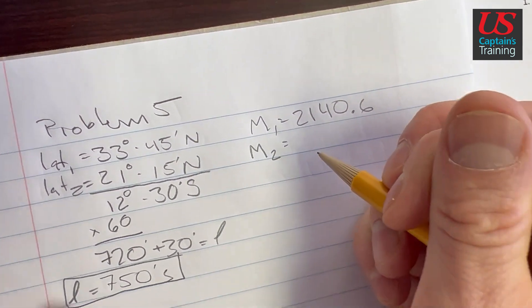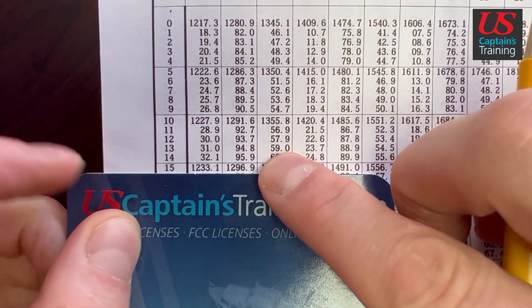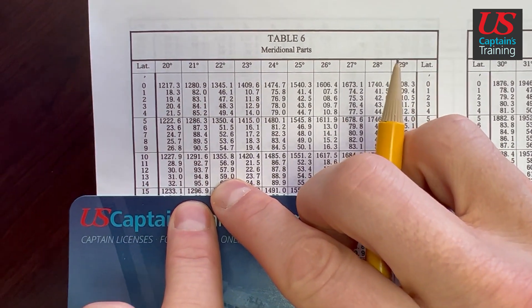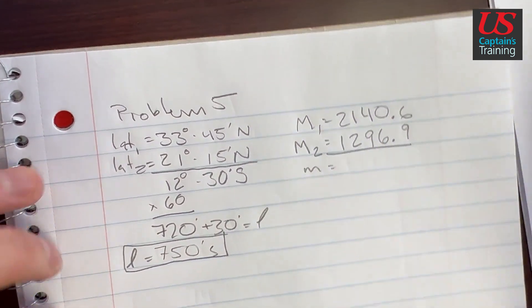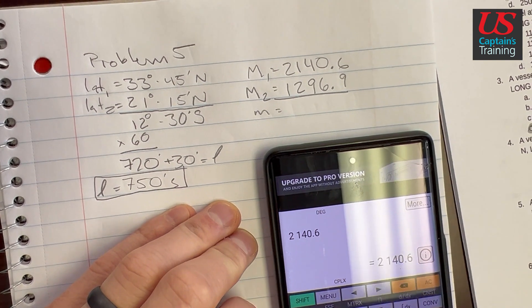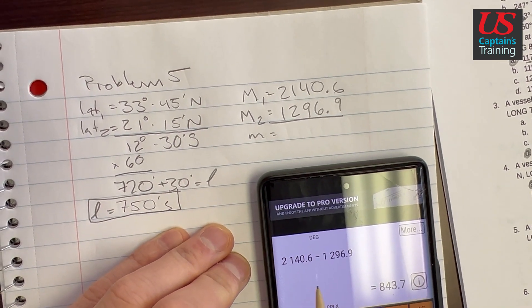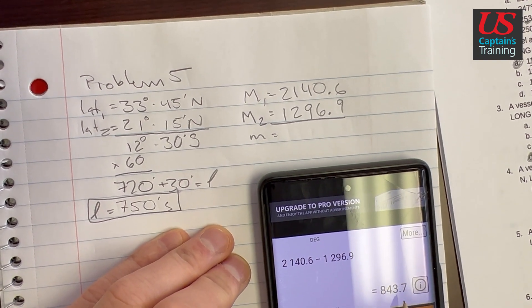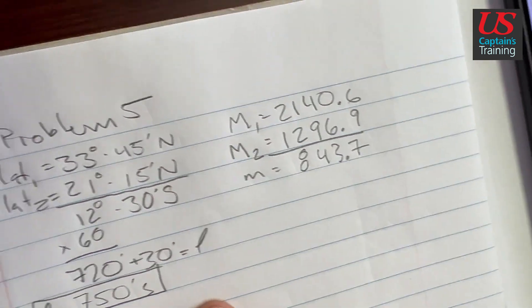M2 is the meridional parts of lat 2, which is 21 degrees, 15 minutes. We find 21 degrees and slide down to 15 minutes — that gives us 1296.9. So little m equals 2140.6 minus 1296.9, which equals 843.7.